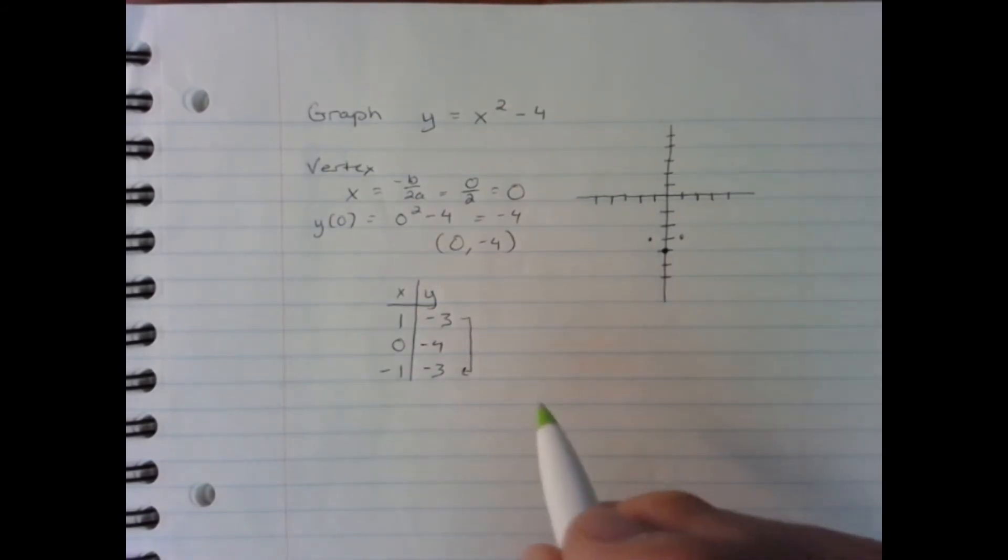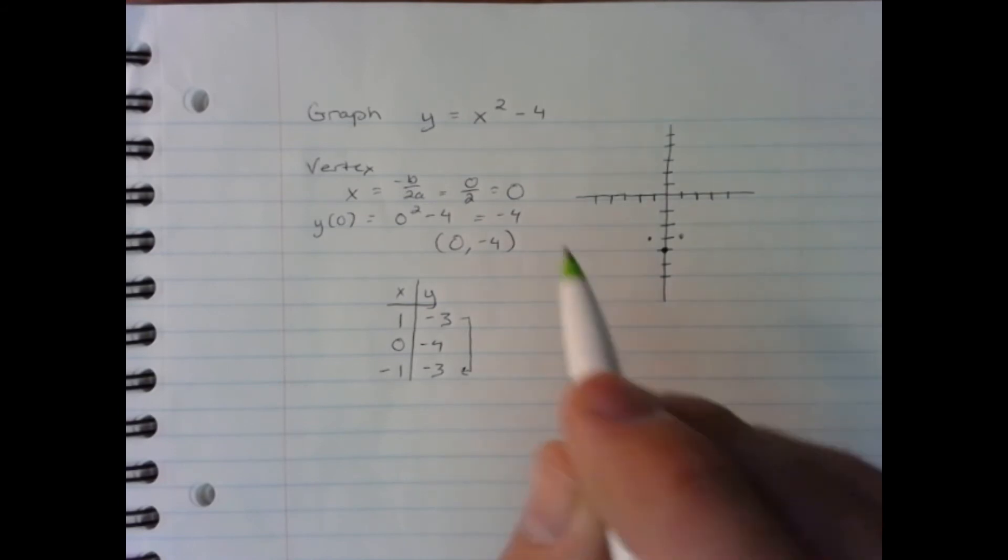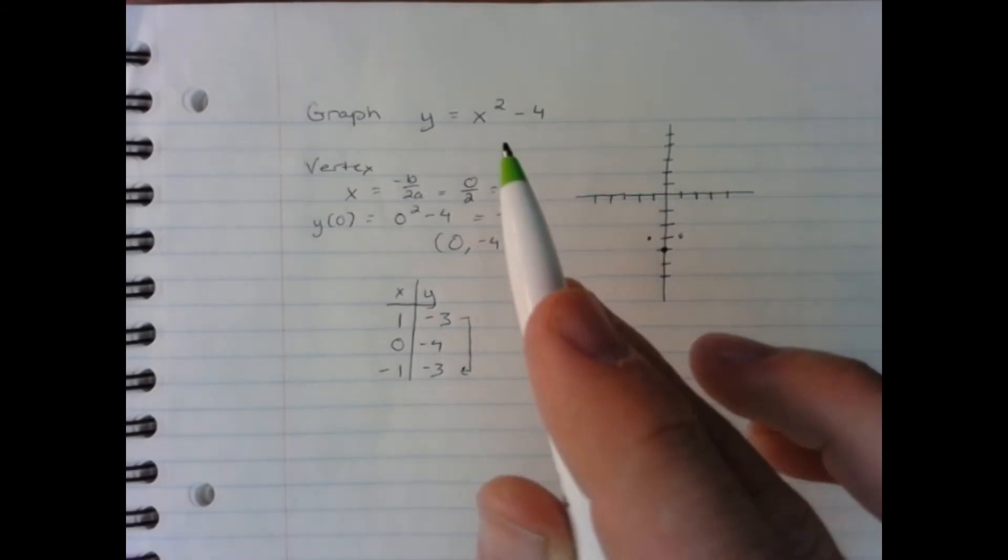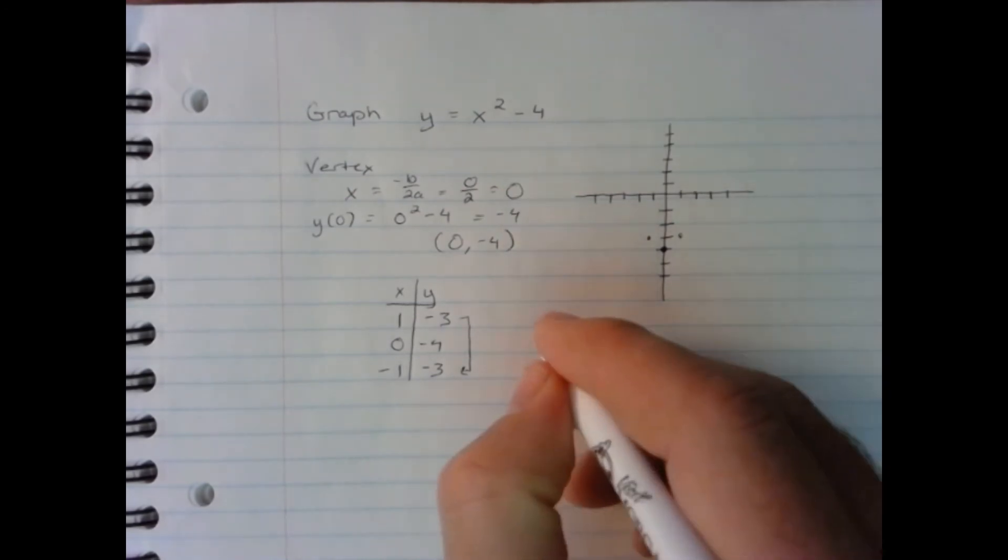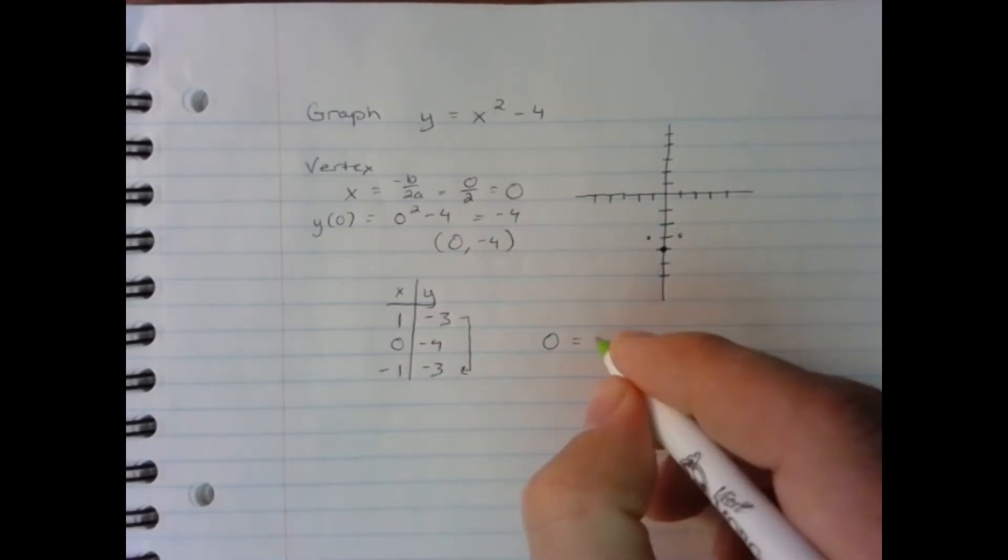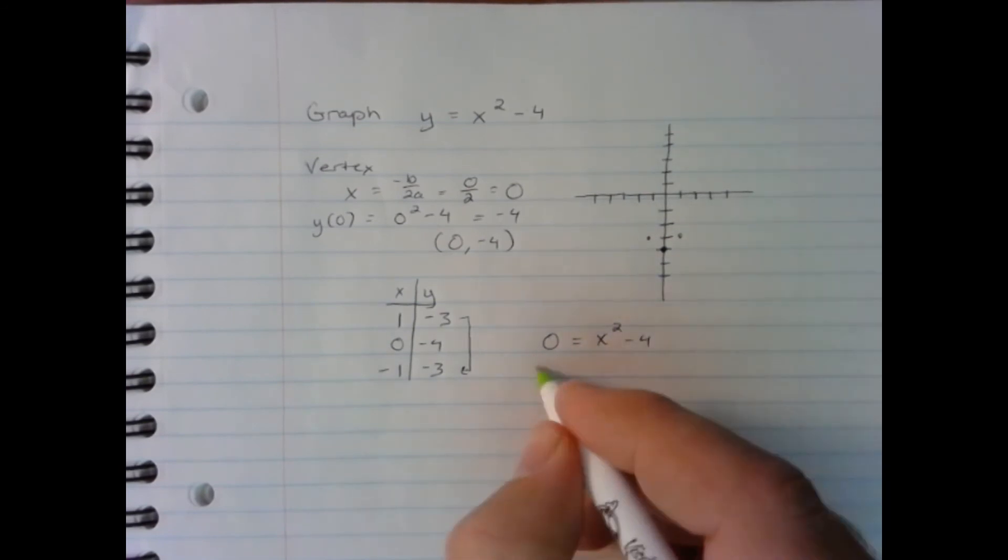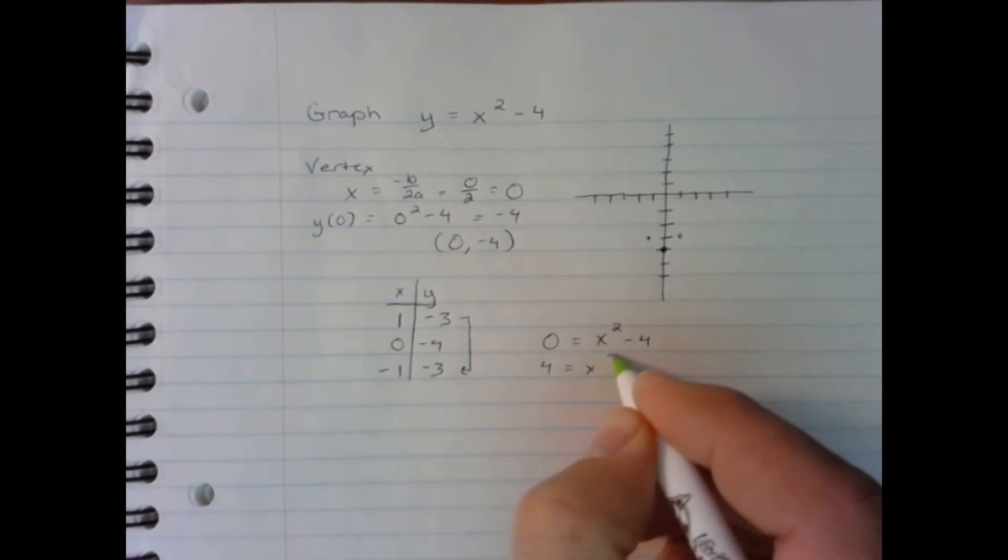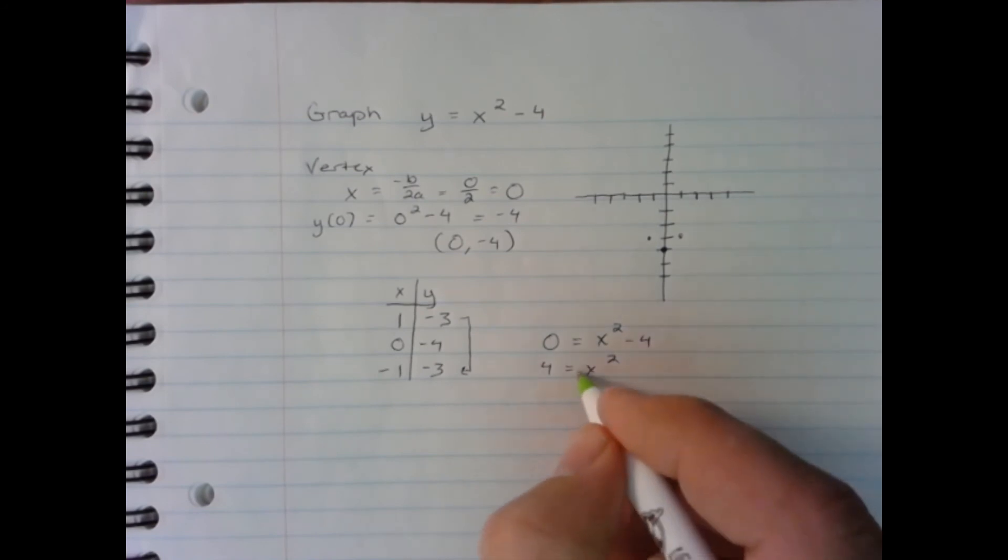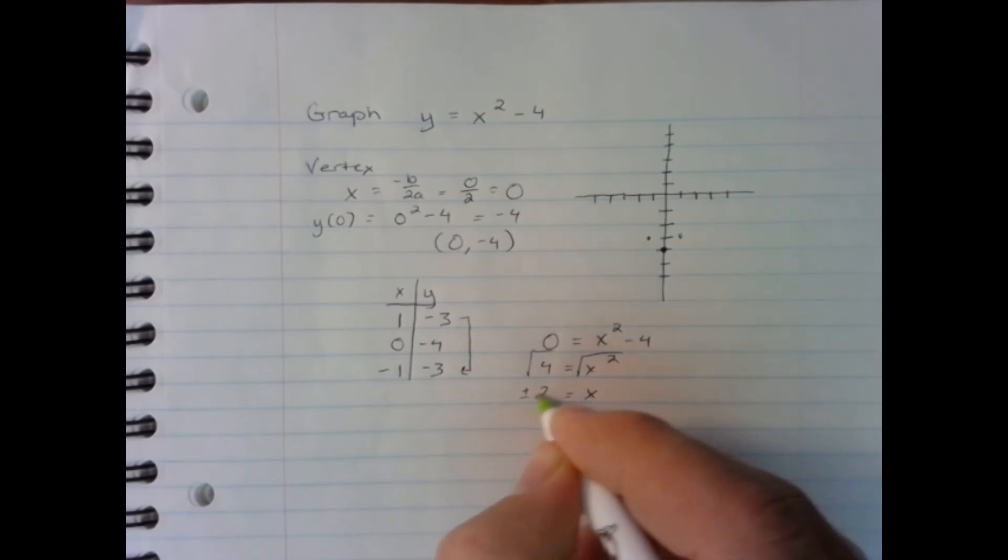Now just to give us a couple extra points, I'm also going to figure the x-intercepts. And I can find that out by plugging 0 in for y and solving for x. So 0 in for y is 0 equals x squared minus 4. Add 4 to both sides to get 4 equals x squared. Then take the square root of both sides to find out x equals either positive or negative 2.